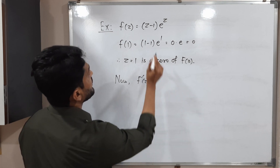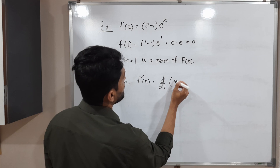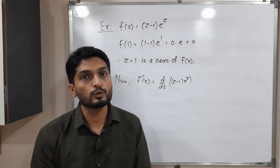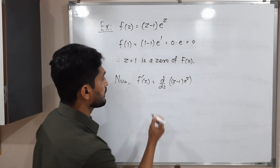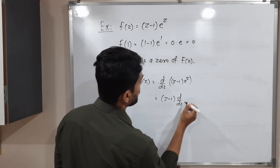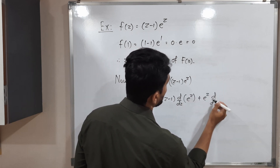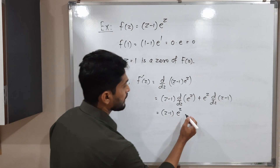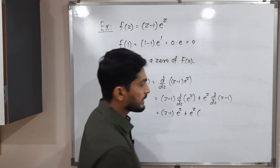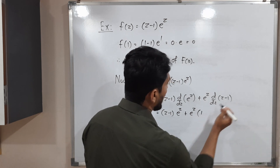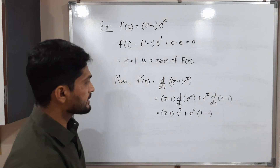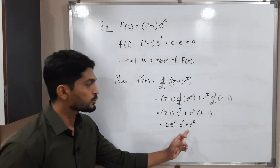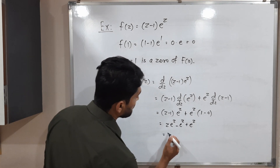Let us find the derivative of f of z equals (z minus 1) e raised to z. We have a product of two functions, so we use the product rule: first into derivative of second plus second into derivative of first. So: (z minus 1) times derivative of e raised to z, plus e raised to z times derivative of (z minus 1). That gives (z minus 1) e raised to z plus e raised to z. Simplifying: z e raised to z minus e raised to z plus e raised to z. The two e raised to z terms cancel, leaving f-dash of z equals z e raised to z.